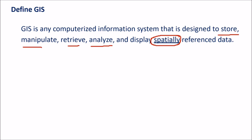All these things are necessary: storing, manipulating, retrieving, analyzing and displaying. These are all part of GIS. Information system means it should provide you information, and computerized means it should be following certain computer science activities like database retrieval and data structure things that are there in computer science.